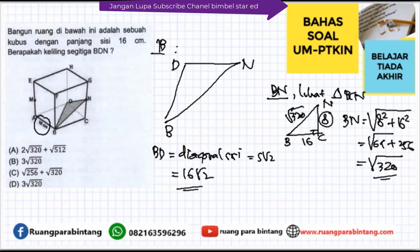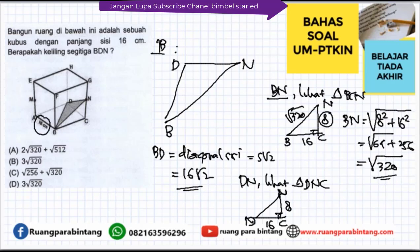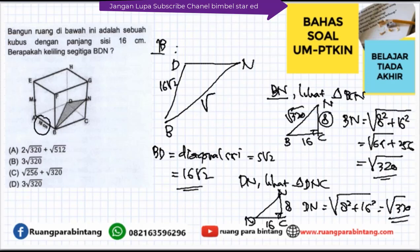Untuk mencari DN, lihat segitiga CDN, siku-siku di C. CD = 16 dan CN = 8, sama seperti sebelumnya. Maka DN juga = akar dari (8² + 16²) = akar 320. Berarti keliling segitiga BDN = BD + BN + DN = 16 akar 2 + akar 320 + akar 320.